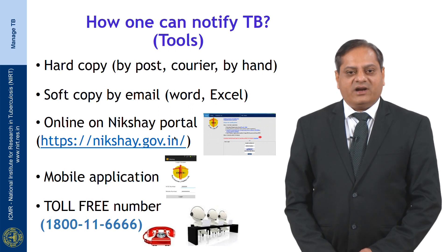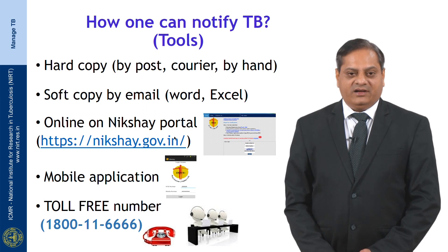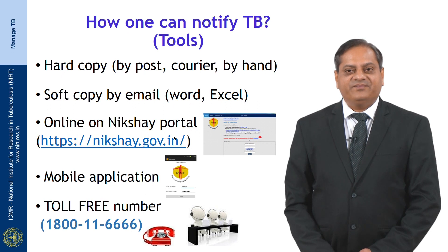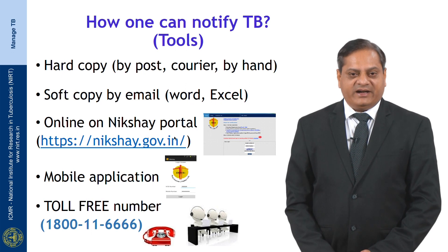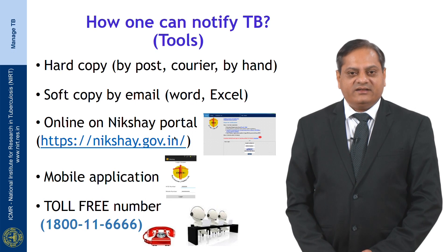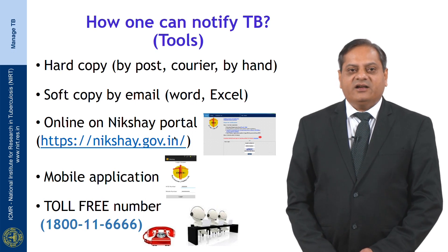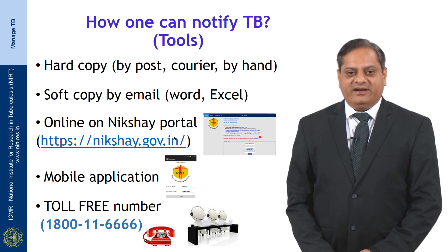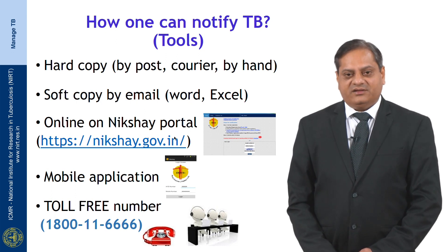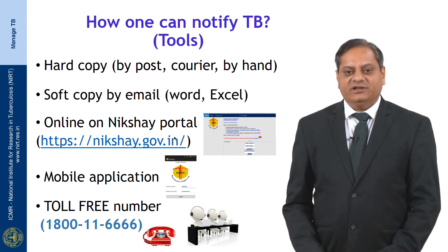Recently, the program has started a national call center with the toll-free number 1800-11-6666. Currently available in a few states, it is being expanded to all states by World TB Day 2018. It will be available in 12 local languages — currently in English and Hindi — and one can notify all TB patients being treated through this toll-free number.